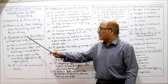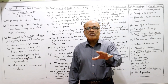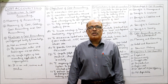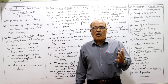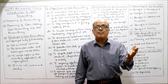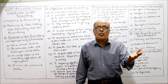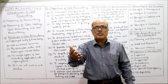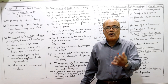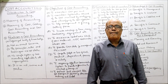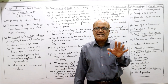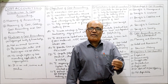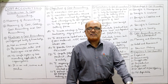Now the features of cost accountancy. First, it is an organized body of knowledge — it is a science because it is based on principles, rules, and procedures that every cost accountant follows. However, it is not an exact science like physics or chemistry — those are perfect sciences, but cost accounting includes a number of estimates and judgments.